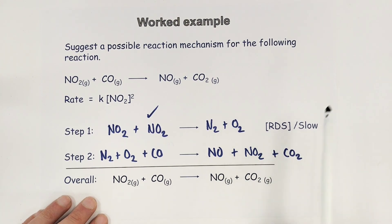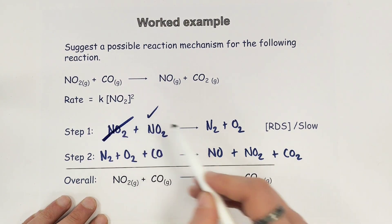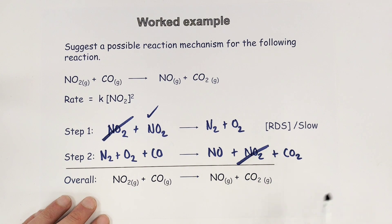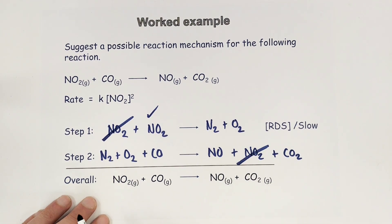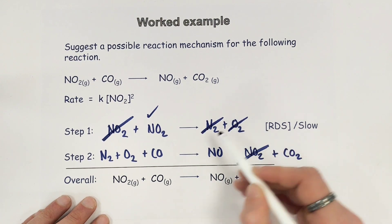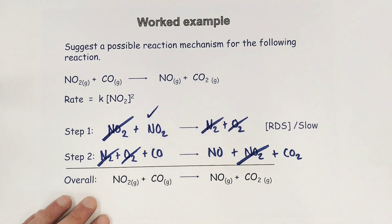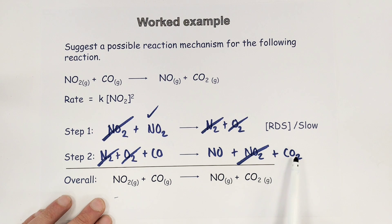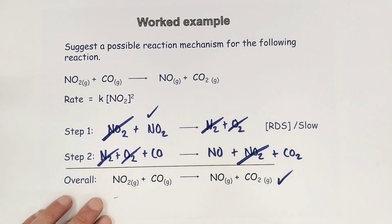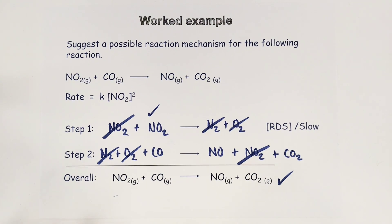Cancelling down what I can: NO2 is on the left-hand side of one equation and the right-hand side of the other, so I can cancel that down, and the N2 and O2 on the right-hand side of step one and the left-hand side of step two are also cancelled, leaving me with one mole of NO2 and one mole of CO forming one mole of NO and one mole of CO2 — in agreement with the overall equation. That has reached the two criteria.